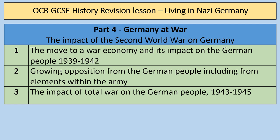In this topic, we're going to look at the impact of the Second World War on Germany. We're going to look at the move to a war economy and its impact on the German people from 1939 until 1942. We're then going to look at growing opposition from the German people, including from elements within the army, such as the Stauffenberg plot. We're then going to look at the impact of total war on the German people from 1943 until 1945.